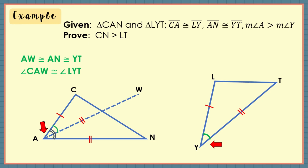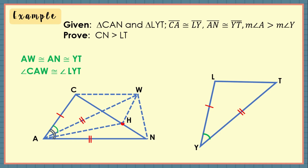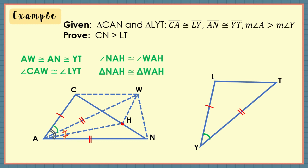Draw a line from point N to W, from point C to W, and from point H to W to form segments. Next, construct the bisector AH of angle NAW such that H is on side CN and angle NAH is congruent to angle WAH. Consequently, triangle NAH is congruent to triangle WAH by the SAS Triangle Congruence Postulate, because side AH is congruent to side AH by reflexive property, and AW is congruent to AN from construction number 1. So, WH is also congruent to HN because corresponding parts of congruent triangles are congruent.